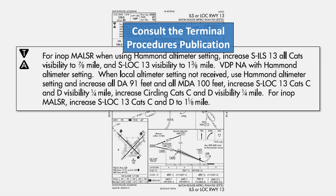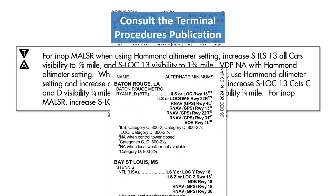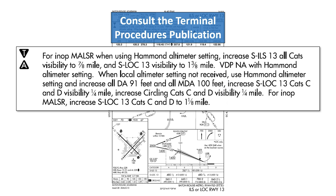We need to consult the terminal procedure publication. The standard minimums for a precision approach like this ILS are 600-2, but the presence of that black triangle with an A means that there are alternate minimums found in that section of the TPP. For Baton Rouge, this approach has notes 1, 2, and 4, which state that the ILS and LOC minimums go up for CAT C and D aircraft, that we can't use this approach as an alternate if the tower is closed, or when local weather isn't available. Note that if we're a CAT A or B aircraft and everything else is working, the 600-2 minimums for the ILS still apply.